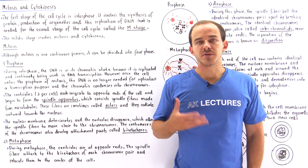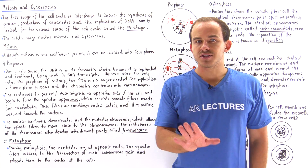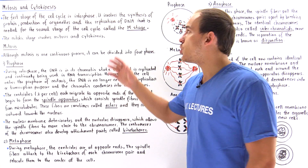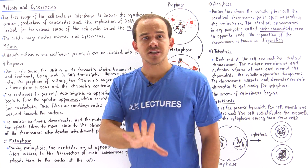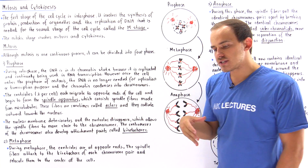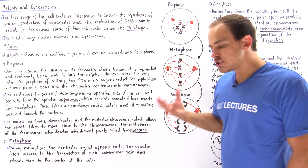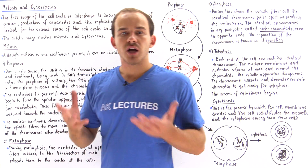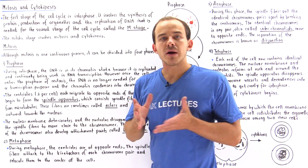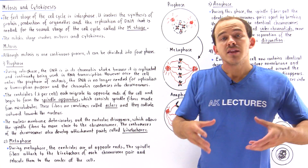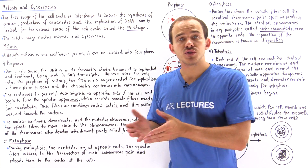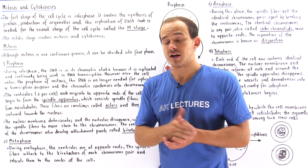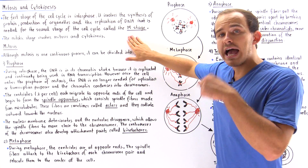The cell cycle of an animal cell consists of two stages. The first stage is known as interphase, which we focused on in the previous lecture. Interphase involves the synthesis of proteins, the production of organelles, and the replication of DNA that are used in the second stage of the cell cycle known as the M stage.